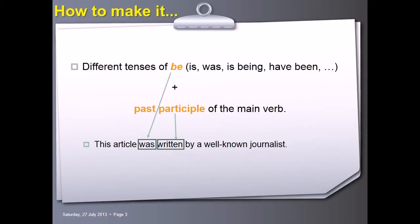Here for instance: this article — past have, be, that has, was — then the verb written in the past participle form, and finally we add the agent when necessary, for example, by a well-known journalist. And we get a good passive sentence: The article was written by a well-known journalist.